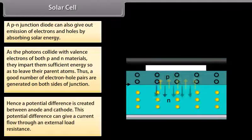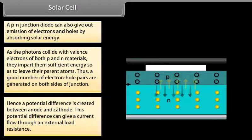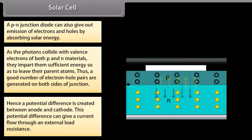Hence, a potential difference is created between the anode and cathode. This potential difference can drive a current through an external load resistance.